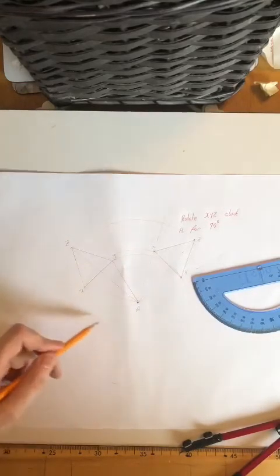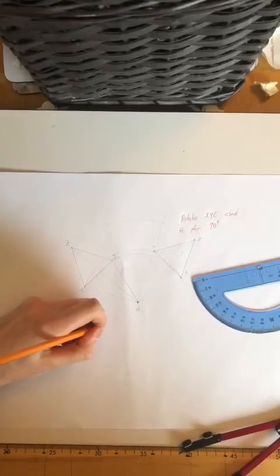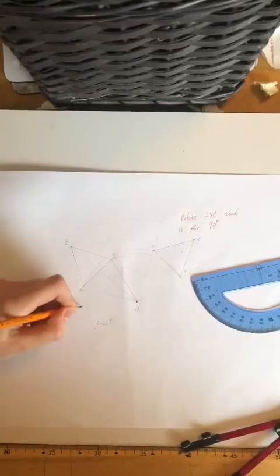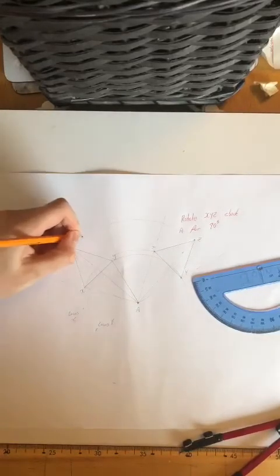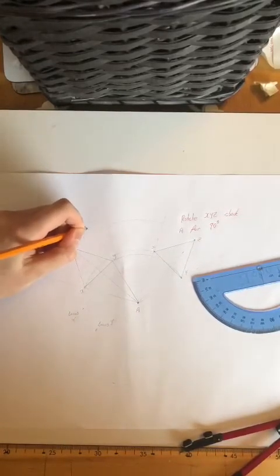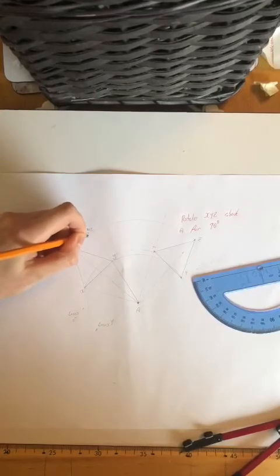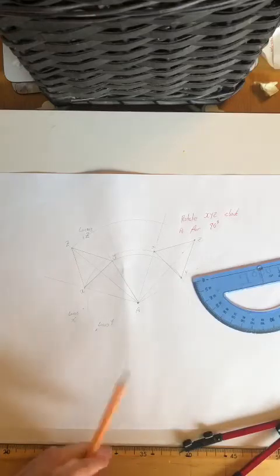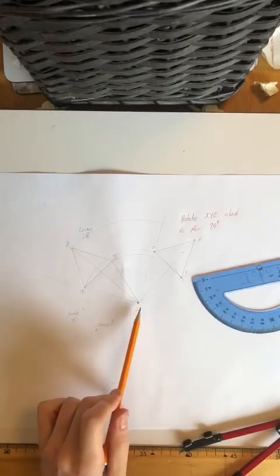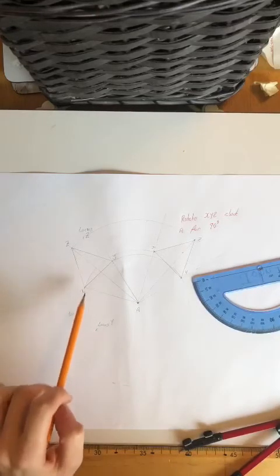This one is the locus of X and this one here is the locus of Z. Now so that's what a locus is—it satisfies one condition which here is rotating around A. We have the locus of points Z, X, and Y.